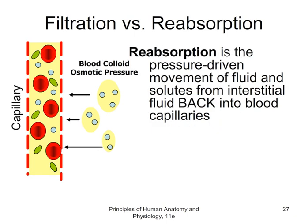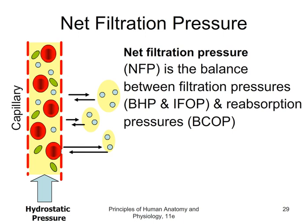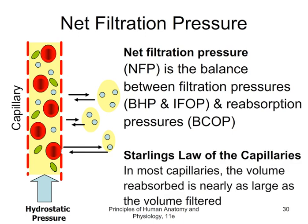Reabsorption is the pressure-driven movement of fluid and solutes from the interstitial fluid back into the blood capillaries — opposite to filtration. The principal force driving reabsorption is blood colloid osmotic pressure (BCOP), caused by large proteins such as albumin within the blood capillary. Albumin acts as a solute, sucking fluids back into blood vessels after hydrostatic pressure from the heart has been lost. Net filtration pressure (NFP) balances these forces. According to Starling's Law of the Capillaries, in most capillaries the volume reabsorbed is nearly equal to the volume filtered, so we don't lose large quantities of fluid.